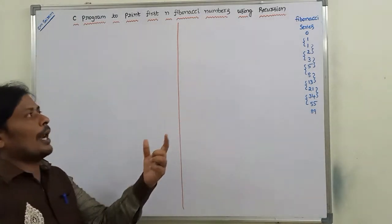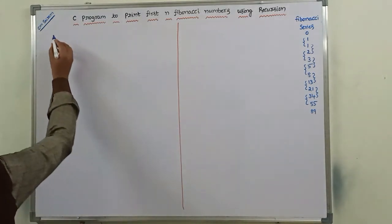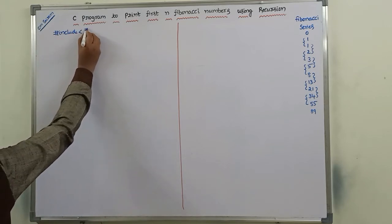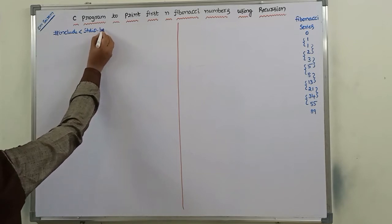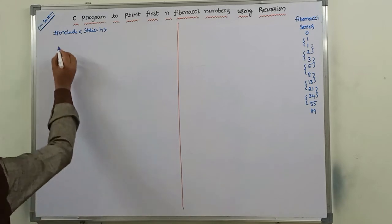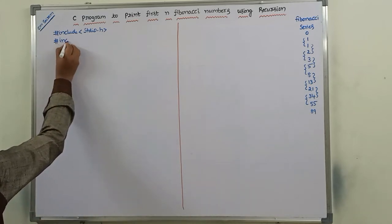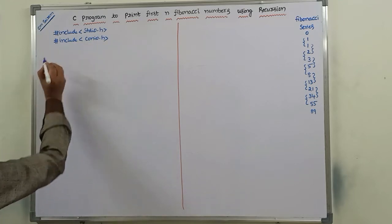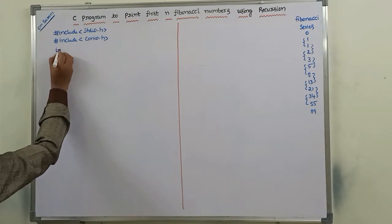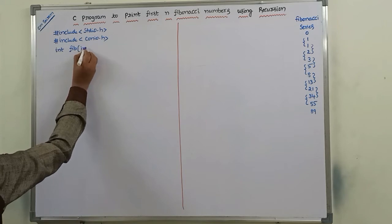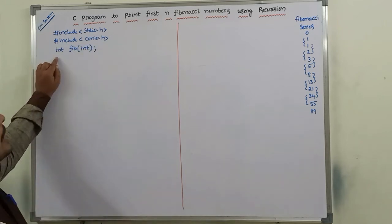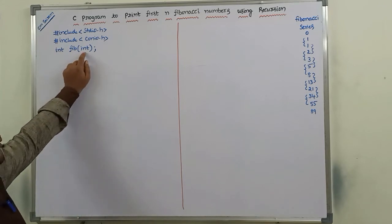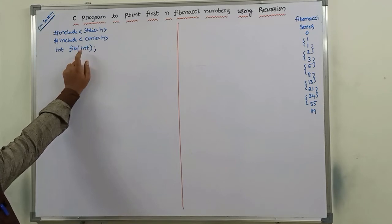Now, how do we write this program using recursion? First, we have to write the header files. Next, we have to write the function prototype: int fib(int). This function prototype tells the compiler that this is the function we are using in the program, and it takes only one parameter of data type int.